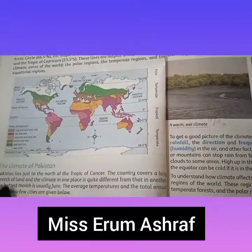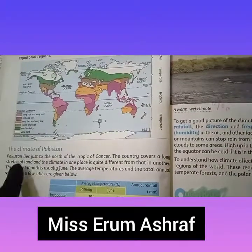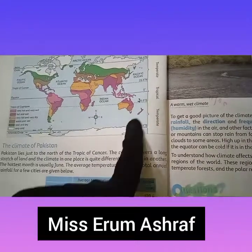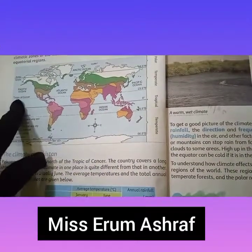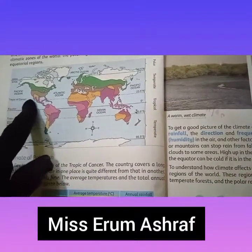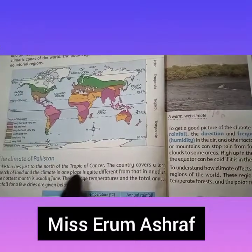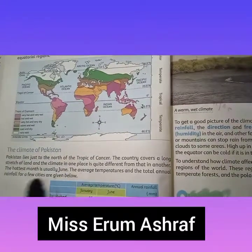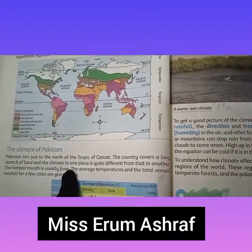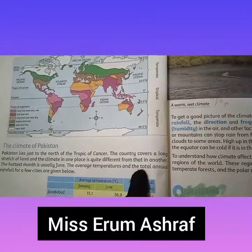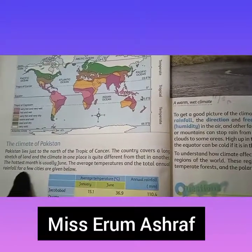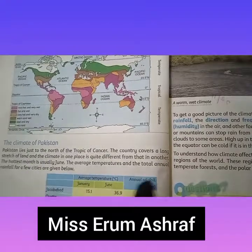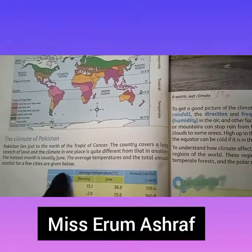Pakistan lies just to the north of the Tropic of Cancer. The Tropic of Cancer you can find here on the map — it is to the north of the Tropic of Cancer, near the Pacific Ocean. The country covers a long stretch of land and the climate in one place is quite different from that in another. The hottest month is usually June. The average temperatures and the total annual rainfall for a few cities are given below.